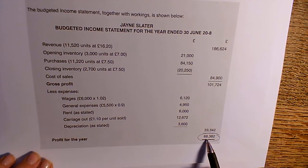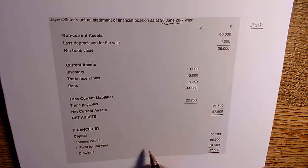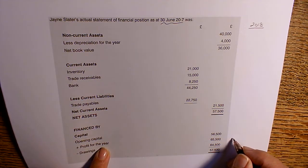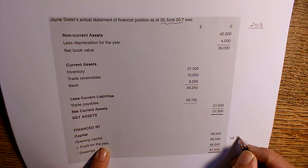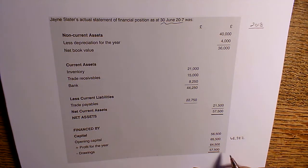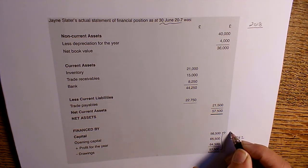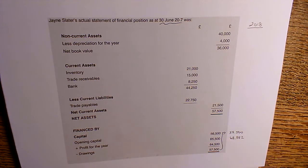The profit for the year we reckoned was £68,382, so let's pop that in. The other thing we can put straight in is the £57,500 that was closing capital last year — that's going to become the opening capital in 2018.